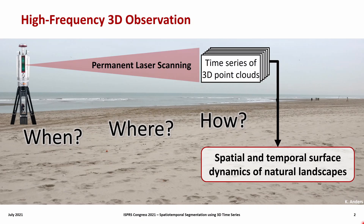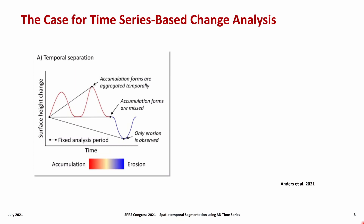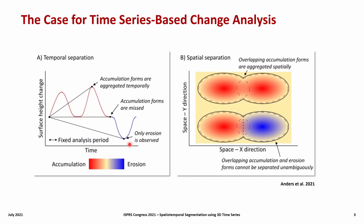When using the standard approach of bi-temporal surface change analysis between pairs of epochs, it is required to select analysis periods. This can lead to successive changes being aggregated or completely missed if the periods are too long. Think of the complex morphodynamics of a beach where sand may slowly accumulate over several days and then be transported away during a stormy period. Accumulation or erosion forms may also spatially overlap, making them difficult to separate in bi-temporal change quantification.